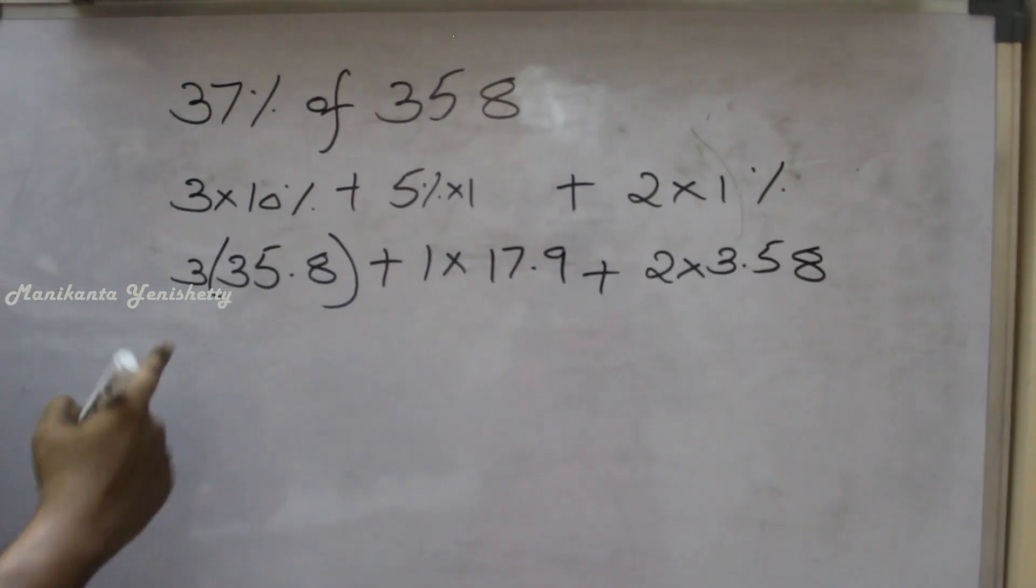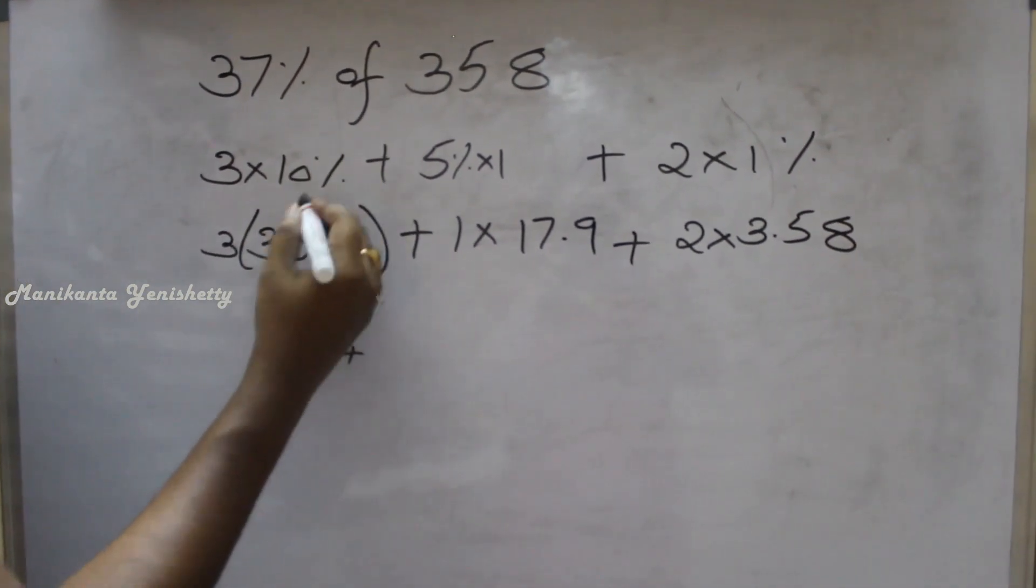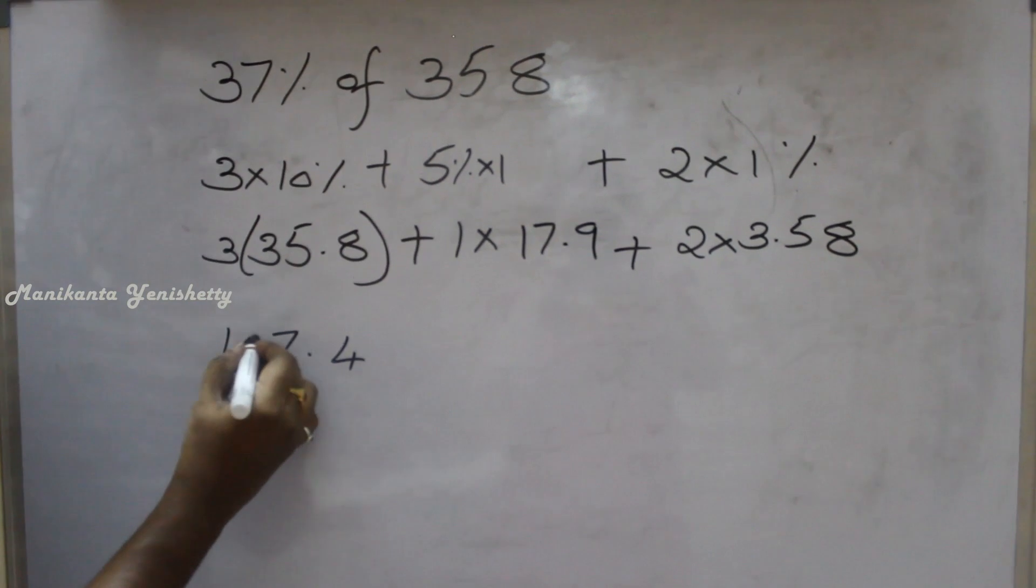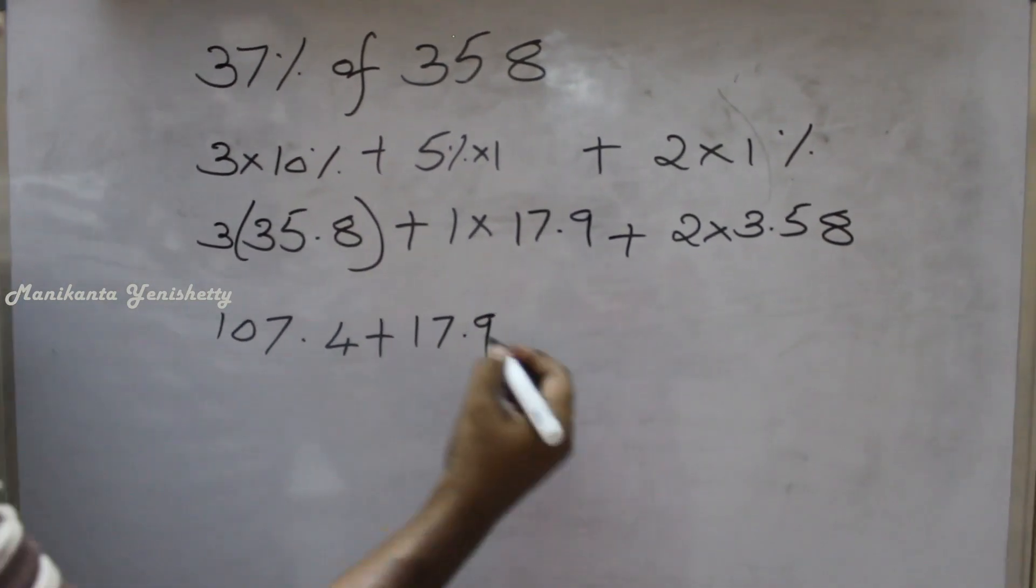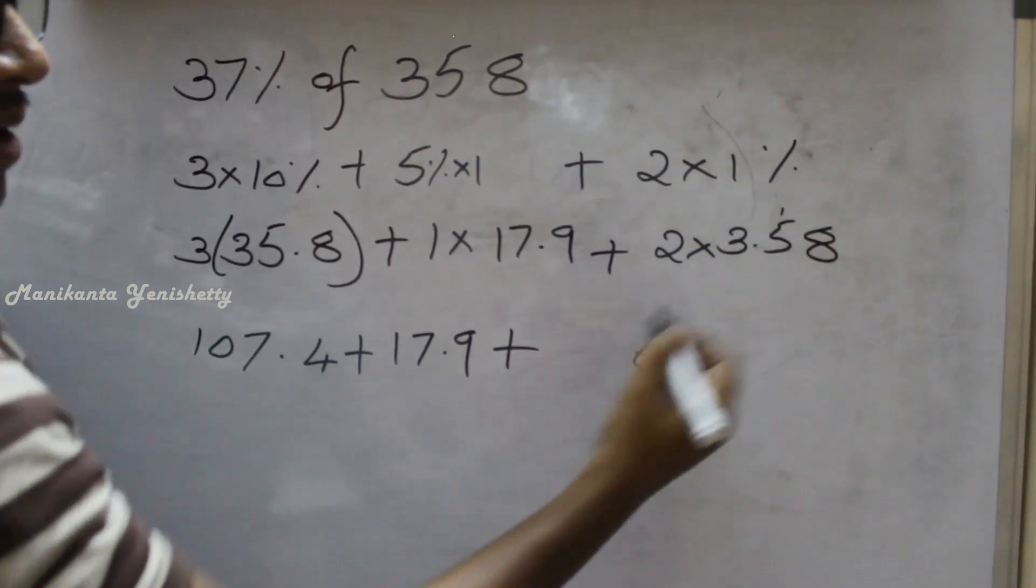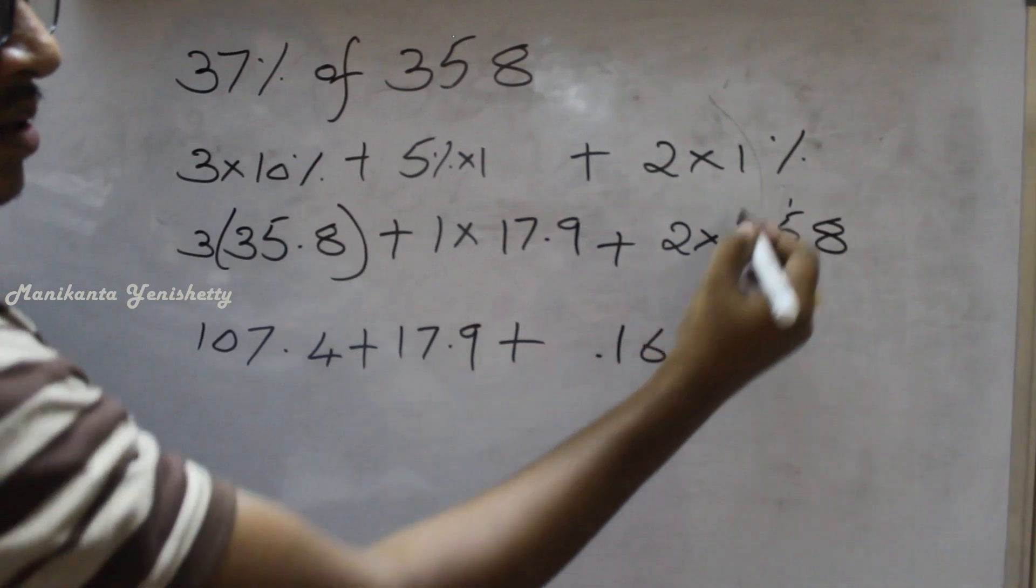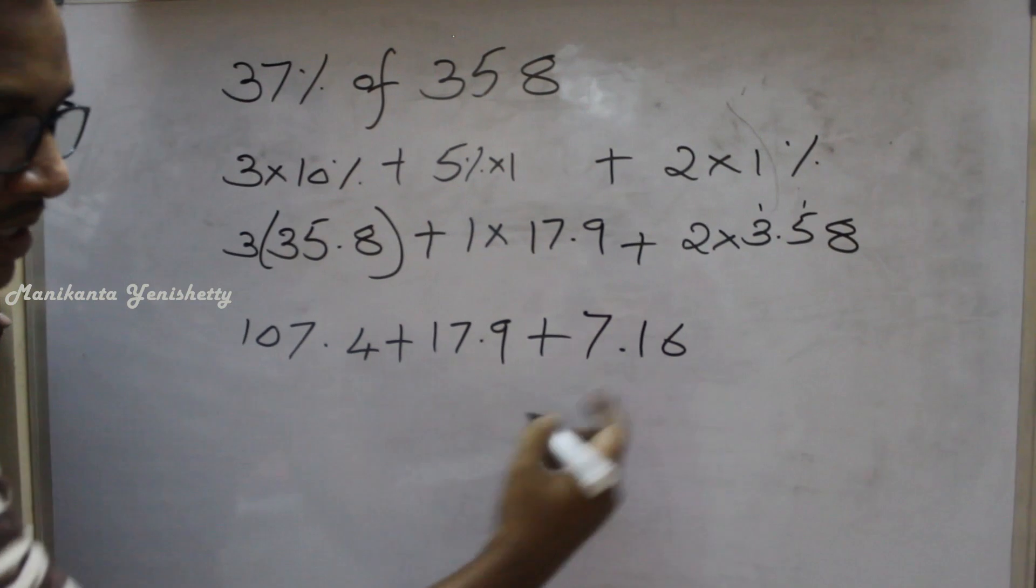Plus 2 into 1% is 2 into 3.58. Now let's multiply: 3 eights are 24. 6, 15 plus 2, 17. 3 threes are 9 plus 1, 10. 7.4 plus 17.9 plus 2 eights are 16. Just add.